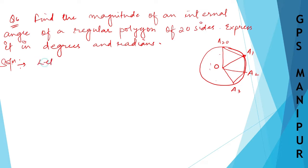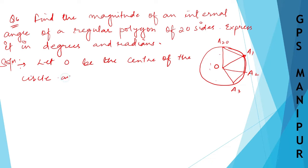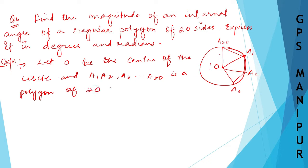Let O be the center of the circle. And A1, A2, A3, ... A20 is a polygon of 20 sides. O is the center and this is the polygon of 20 sides.